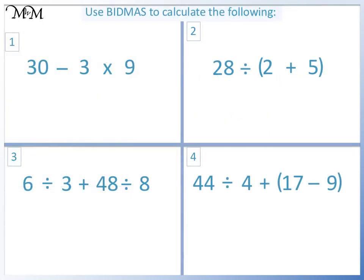Here are some questions for you to try. Use BIDMAS to calculate the following. Pause the video now and have a go. The first letter of BIDMAS that we come to is M for multiplication. 3 times 9 equals 27. 30 take away 27 equals 3.